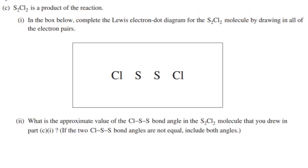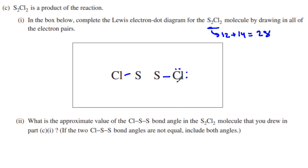Now we're going to the Lewis dot diagram for S2Cl2. The first thing we want to do is add up our valence electrons. We have six valence electrons for each sulfur, so 12 total; and seven valence electrons for each chlorine, so 14 for two chlorines — giving us 28 electrons to use. Halogens always do a single bond, so we do a single bond on each end. We add the leftover eight valence electrons as lone pairs, using all 28. That is our Lewis dot structure, and it is worth one point.